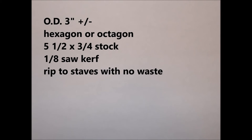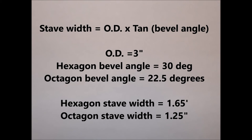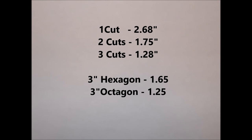Example 2: we want to make a staved water pipe for a water feature. The outside diameter will be about 3 inches. The shape will be either a hexagon or an octagon. We have plain cedar lumber 5.5 inches wide and 3/4 inch thick; we want to rip it to stave widths with no waste. The table saw has a 1-1/8-inch kerf. The closest fits are: making 2 cuts forming 1-3/4-inch staves for a hexagon, or 3 cuts forming slightly over 1-1/4-inch staves for an octagon. We would probably choose the wider staves for a hexagon since it requires less work and glue.